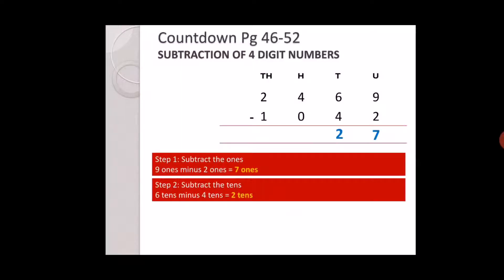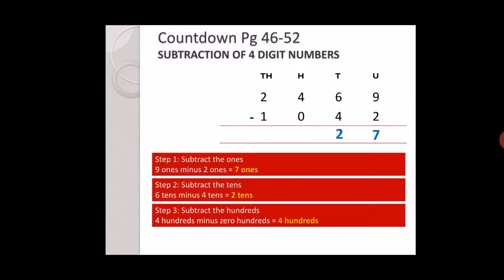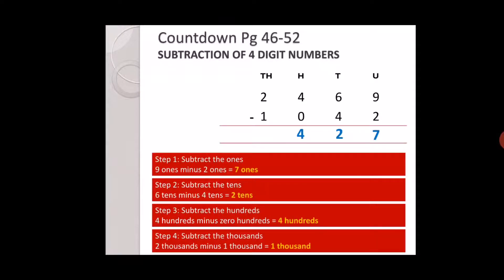In the hundreds place there is four and zero, so four minus zero is four. In the thousands place there is two and one, two minus one is one. The answer is one thousand four hundred and twenty seven.